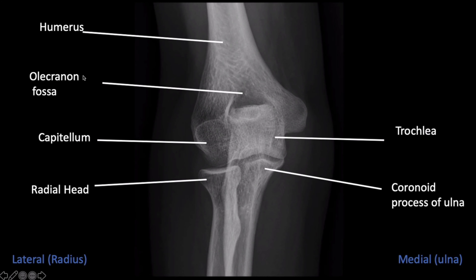This is the humerus, olecranon fossa, capitulum, radial head, coronoid process of ulna, and trochlea. This is the medial side, which is the ulnar side; this is the lateral side, the radial side.